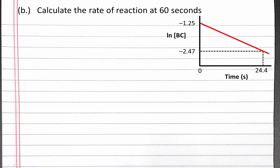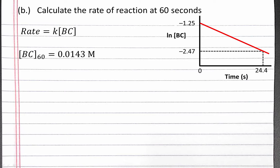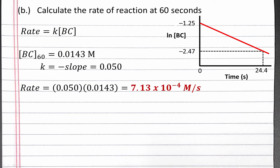Next, we'll calculate the rate of reaction at 60 seconds. Since this is a first-order reaction, rate is equal to K times our concentration of BC. Our concentration of BC at 60 seconds, which we already calculated, is 0.0143 molar. Our rate constant is equal to the negative of our slope, or positive 0.05. Plugging these into our differential rate law, we get rate equals 0.05 times 0.0143, which equals 7.13 times 10 to the negative 4th molar per second.